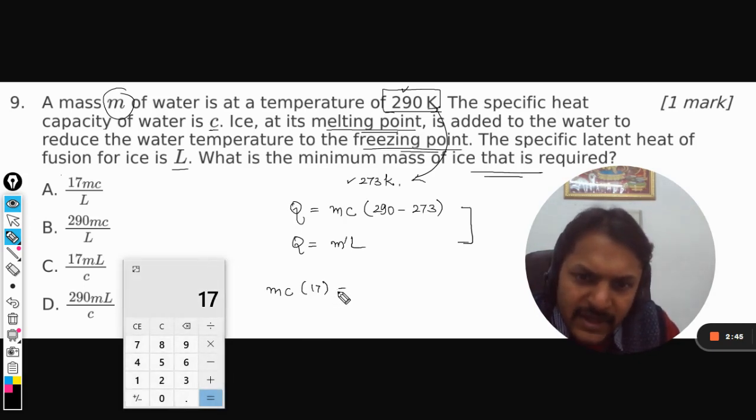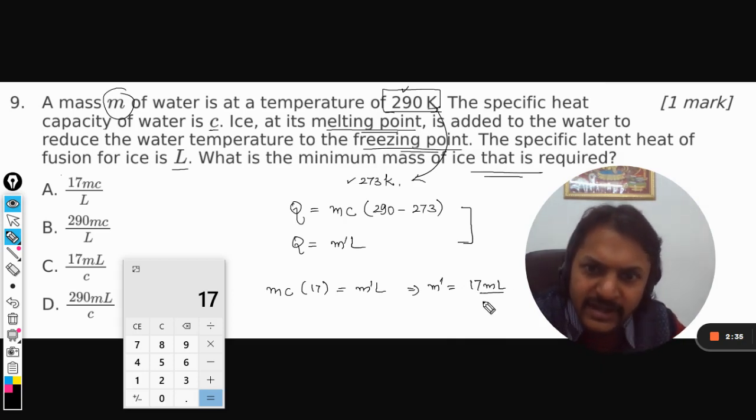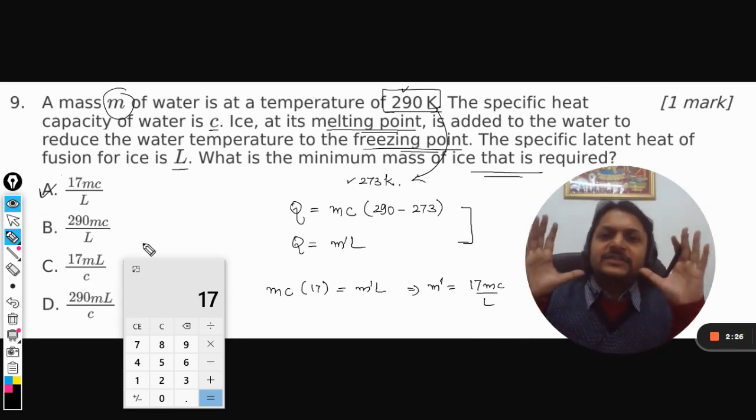From here I can say what is the mass of ice required: 17mC divided by L. Yes, so A is the correct answer for us, and this is how we do this.